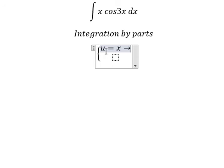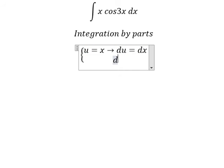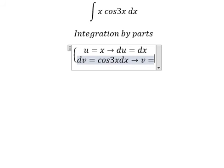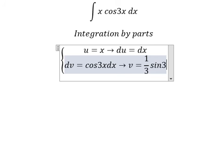Next we need to differentiate both sides. For dv we have cosine 3x dx. The integration of this gives v equals to 1 over 3 sine 3x.